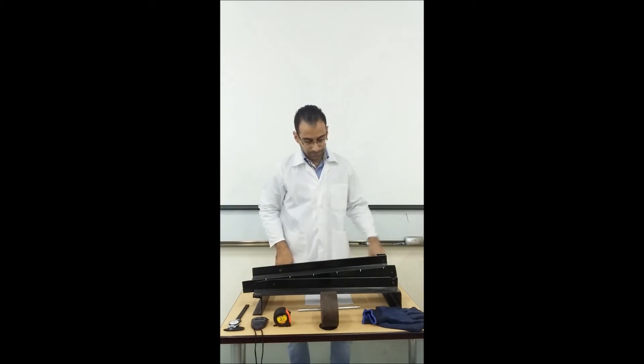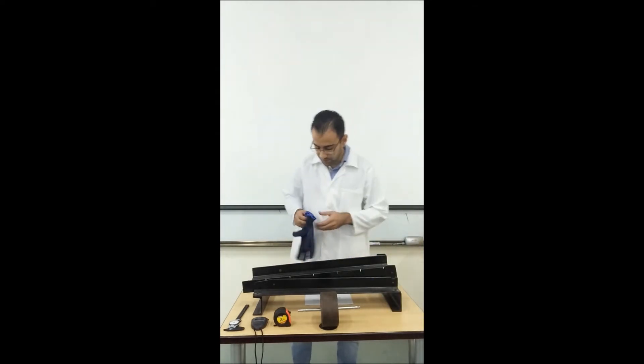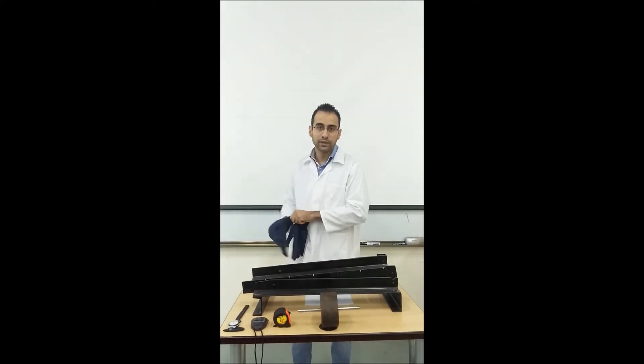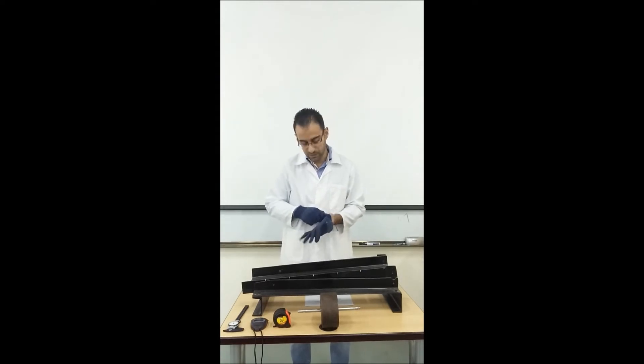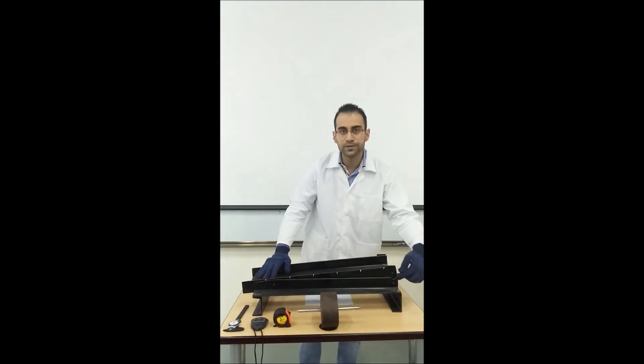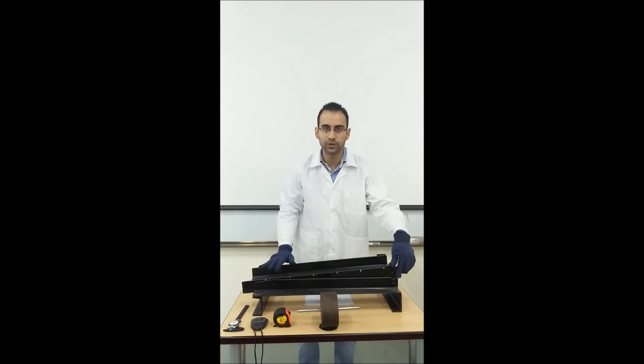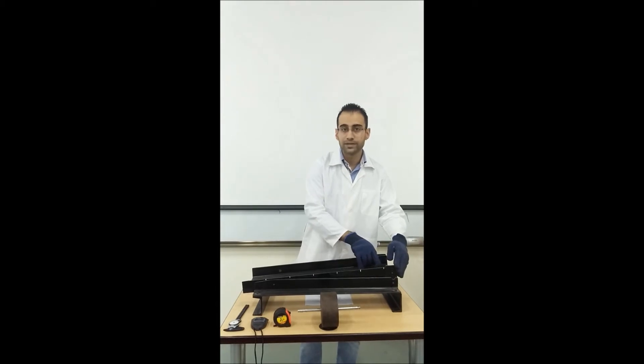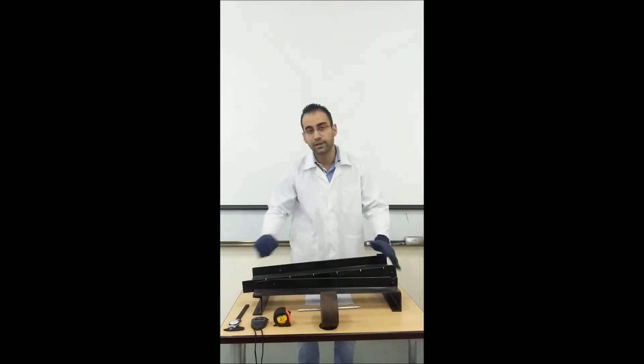So we'll brief you on the experiment setup quickly. This slope can be adjusted but you are not doing any adjustment - this is preset for you. We have distance marks at every 10 centimeters, so we got 10, 20, 30, 40, 50, and maximum is 60 which is the total length of the slope.